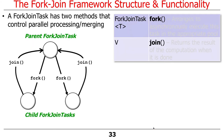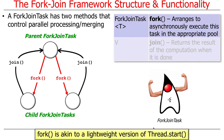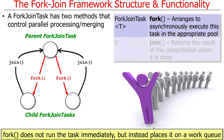There are two key methods in a ForkJoinTask: Fork and Join, used to control parallel processing and merging of results. Fork arranges to asynchronously execute a task in the appropriate thread pool. You can think of calling Fork as a lightweight version of thread.start — it doesn't create a Java worker thread directly, but instead places the subtask onto the head of a work queue.